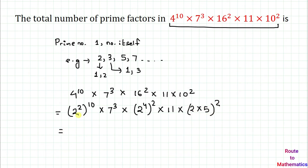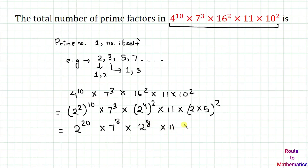Now the powers get multiplied: 2 to the power 2 whole to the power 10 gives 2 to the power 20, multiplied with 7 to the power 3. Similarly, 2 to the power 4 whole to the power 2 gives 2 to the power 8, multiplied with 11, multiplied with 2 to the power 2, and 5 to the power 2. Now all terms are in the form of prime numbers.